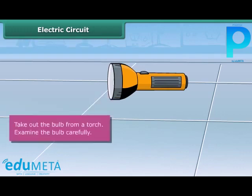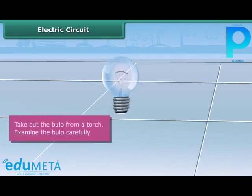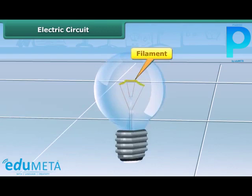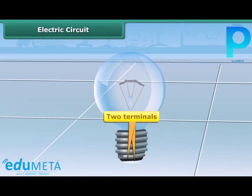Step 1: Take out the bulb from a torch. You can see that the bulb is a small globe of thin glass inside which a coiled filament is fixed on two thick wires. One of these thick wires is connected to the metal case around the base of the bulb. The other wire is connected to the metal tip at the base of the bulb. The metal case and metal tip at the base are two terminals of the bulb.